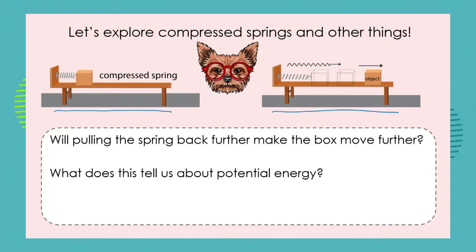We've got an apparatus here where we can push this box against the spring, compressing it — meaning squashing that spring up — and then we can release the spring and see how it shoots the box forward. Here we've got potential energy; with the box we have kinetic energy. How can we give the box more potential energy — in other words, how can we increase the potential energy? And what effect will increasing the potential energy have on the kinetic energy?